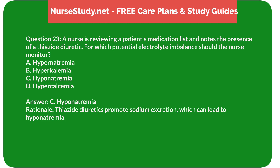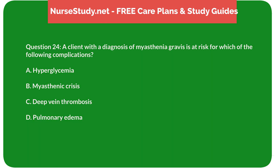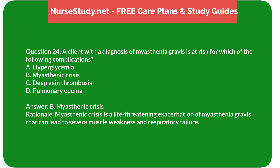Question 24: A client with a diagnosis of myasthenia gravis is at risk for which of the following complications? A) Hyperglycemia, B) Myasthenic crisis, C) Deep vein thrombosis, D) Pulmonary edema. Answer: B, Myasthenic crisis. Rationale: Myasthenic crisis is a life-threatening exacerbation of myasthenia gravis that can lead to severe muscle weakness and respiratory failure.